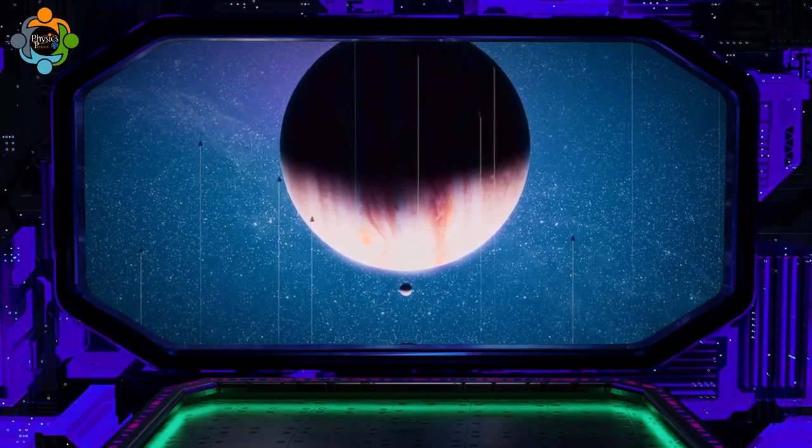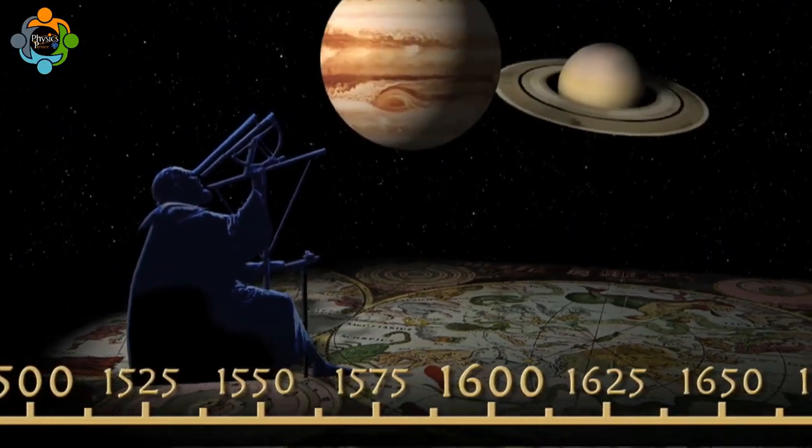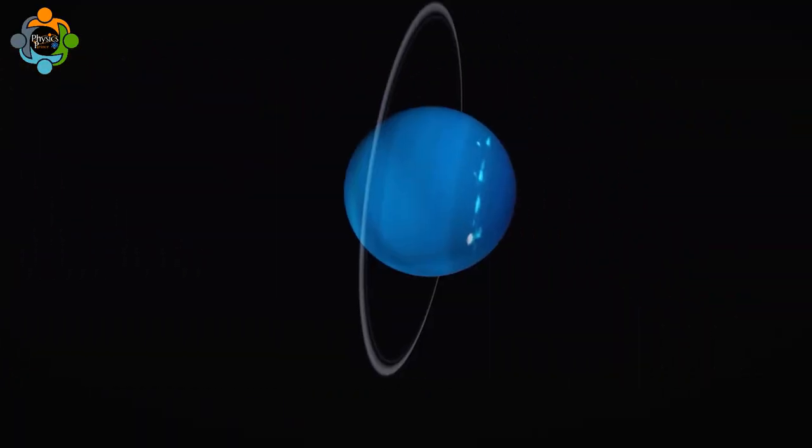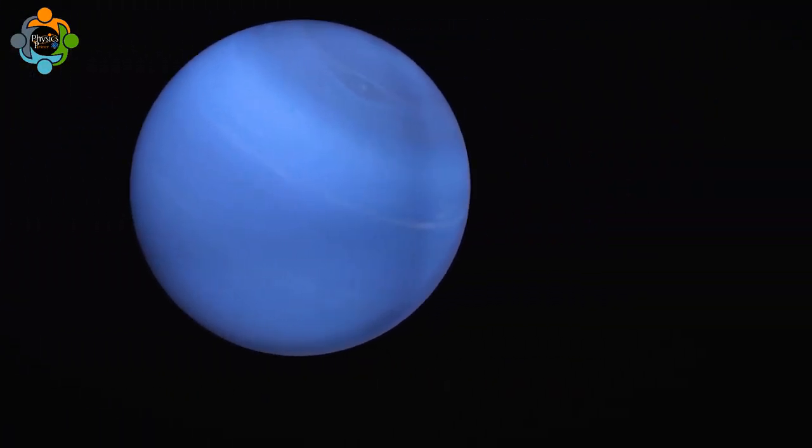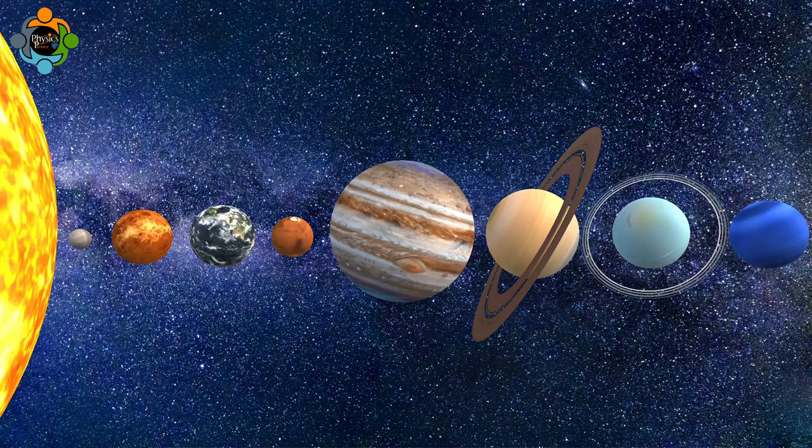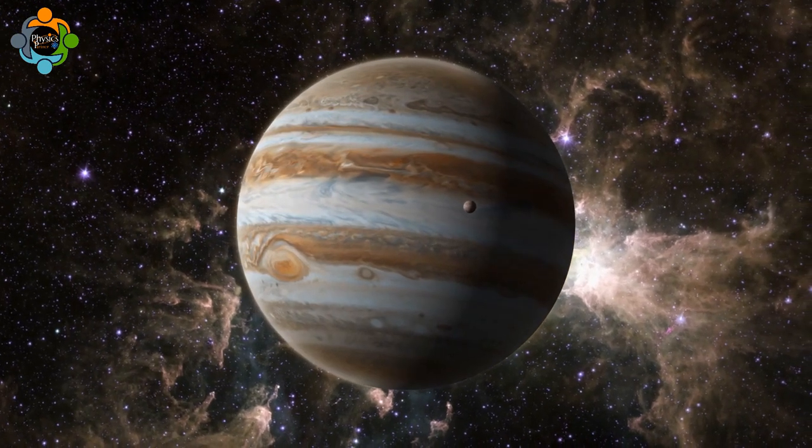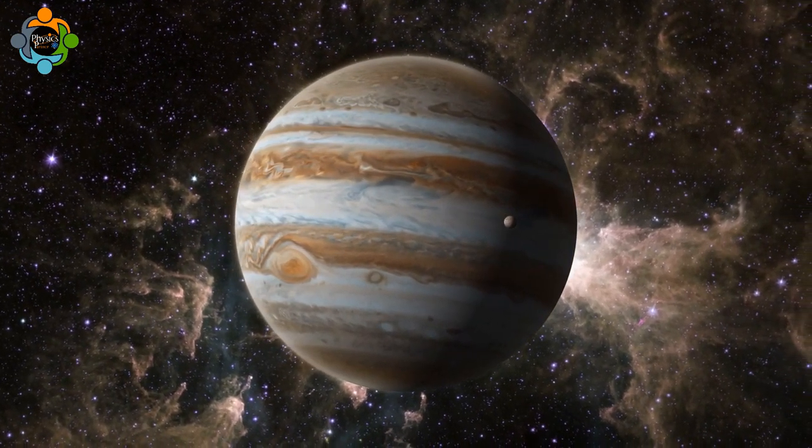When we apply Kepler's Third Law to the outer planets - Jupiter, Saturn, Uranus, and Neptune - we can see how their orbital periods and distances from the sun are interconnected. For example, Jupiter, the largest planet in our solar system, has a relatively short orbital period.